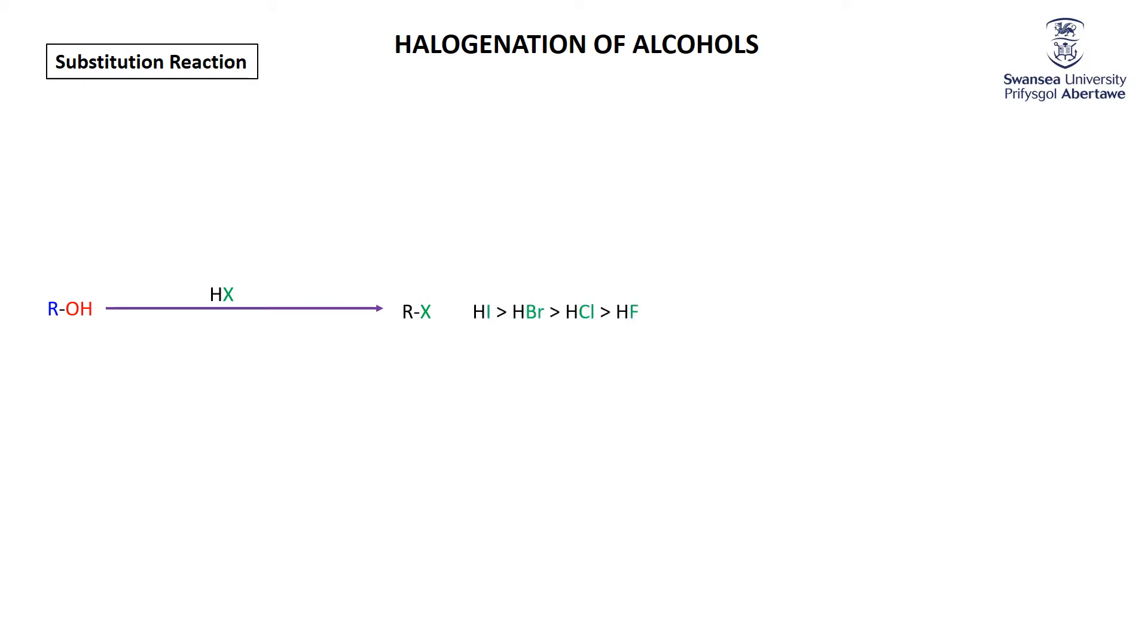As you might expect, HI reacts better than HBr, which reacts better than HCl, which reacts better than HF. Of course, we've already seen iodine does everything better. Tertiary alcohols react better than secondary alcohols, which react better than primary alcohols. We'll see the reason for that when we look at the mechanism in the next slide.